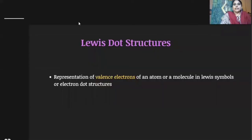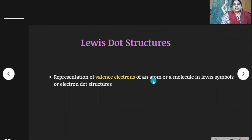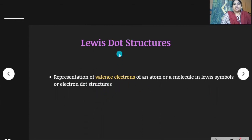Lewis dot structures: in bond formation, inner core electrons are not affected — only valence electrons are affected. The representation of valence electrons of an atom or a molecule using Lewis symbols or electron dot structures are called Lewis dot structures.